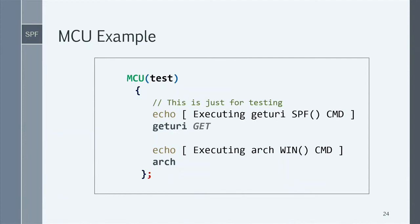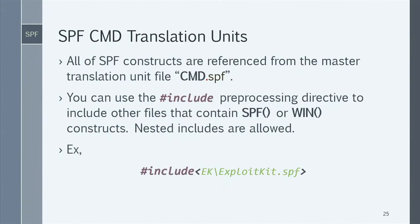To organize constructs across different translation units — separate files, like one for malware, one for vulnerabilities, one for suspicious user agents — you can use the 'include' preprocessor directive, just like in C. There are no restrictions on where you use it; it can be used in a nested way and is fully supported.